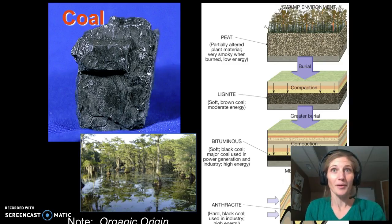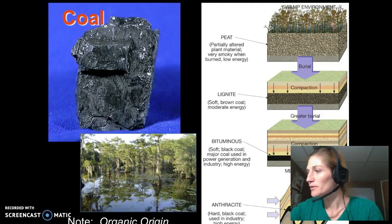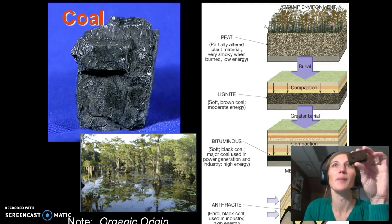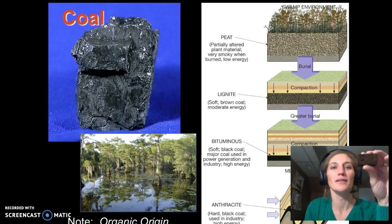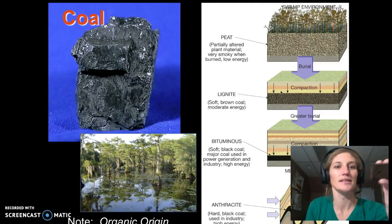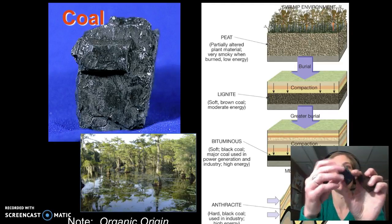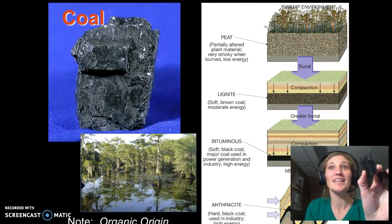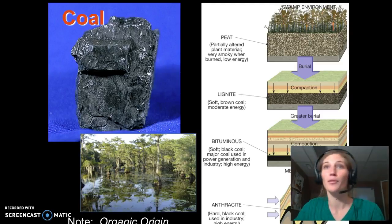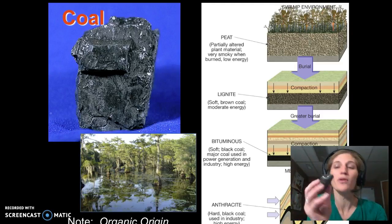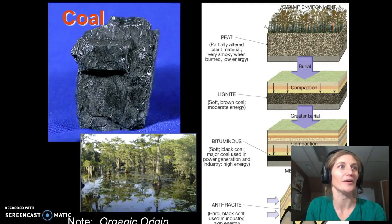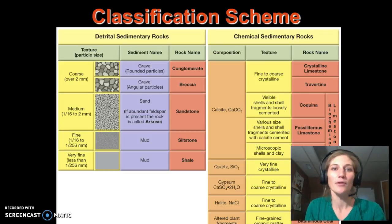Coal is another chemical sedimentary rock that forms from organic plant materials. Take sample 28 — this is your peat. As plants die, they become compacted and get buried, starting to form into lignites. Those can then get compacted even more to become bituminous coal, which is your sample 27. If they get heated and metamorphosed, they will become sample 36 — anthracite coal, which is actually metamorphic. That's how your sedimentary rocks are classified.